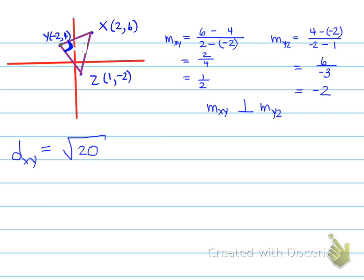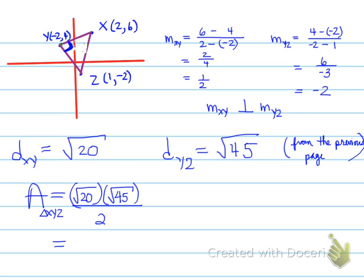So, the distance of xy was root 20. Distance of yz was root 45. We call one the base, another one the height. So, you get root 20 times root 45, all divided by 2, and that is the area of triangle xyz. Multiply them out. Divide by 2, and you get 15 units squared, or 15 square units.